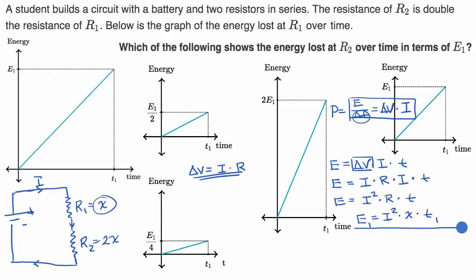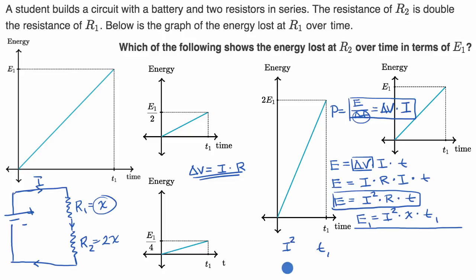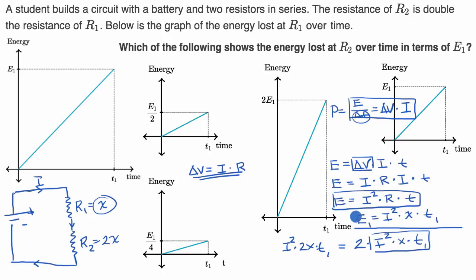Now let's think about what the energy dissipated at time T1 for our second resistor would be. Going back to the equation, energy dissipated for R2 equals T1 times I squared — remember, we have the same current going through both resistors since they're in series — times the resistance, which is 2X instead of X. So we can rewrite this as 2 times I squared times X times T1. That quantity in brackets is exactly E1, so the energy dissipated at R2 at time T1 is 2E1.